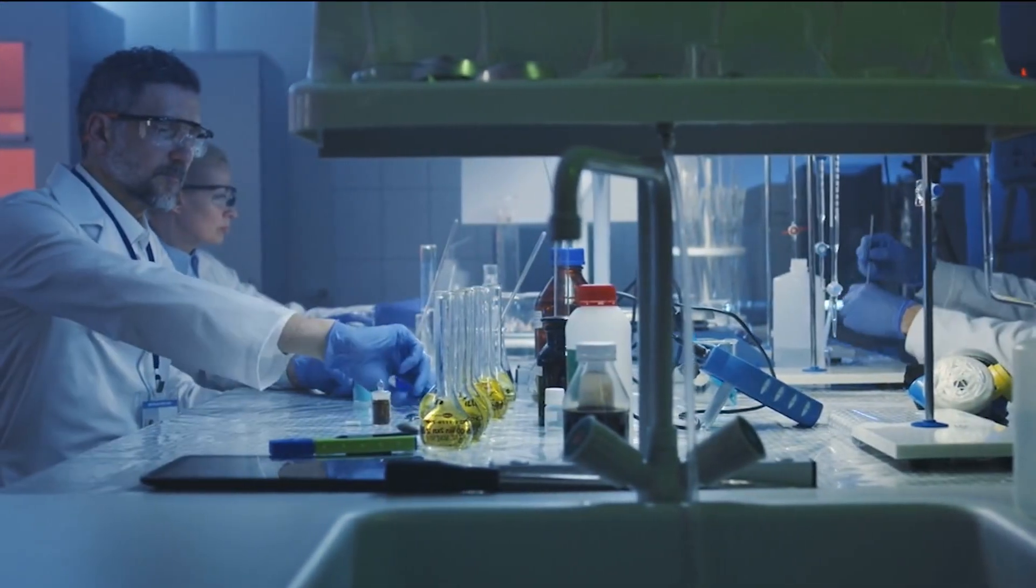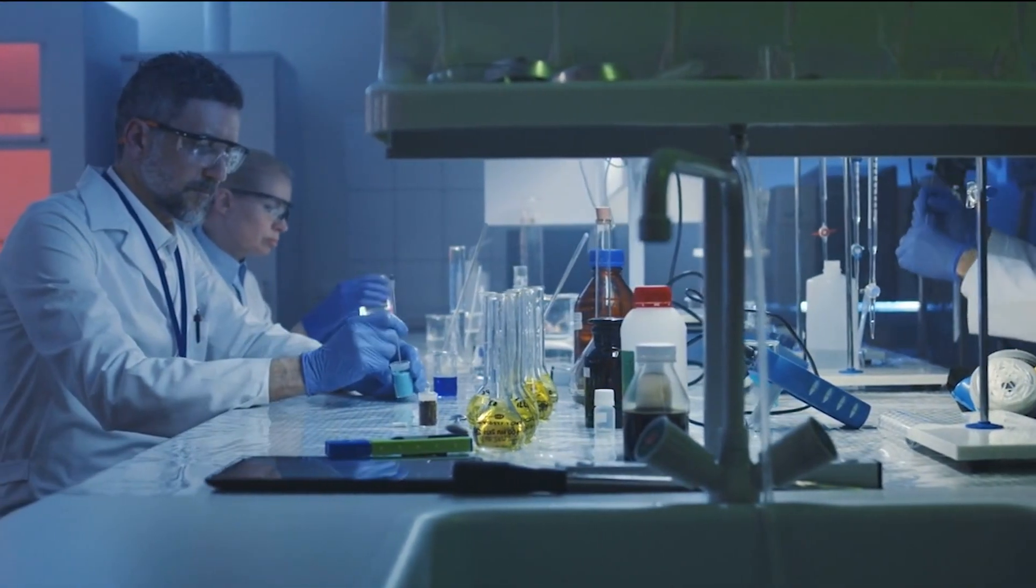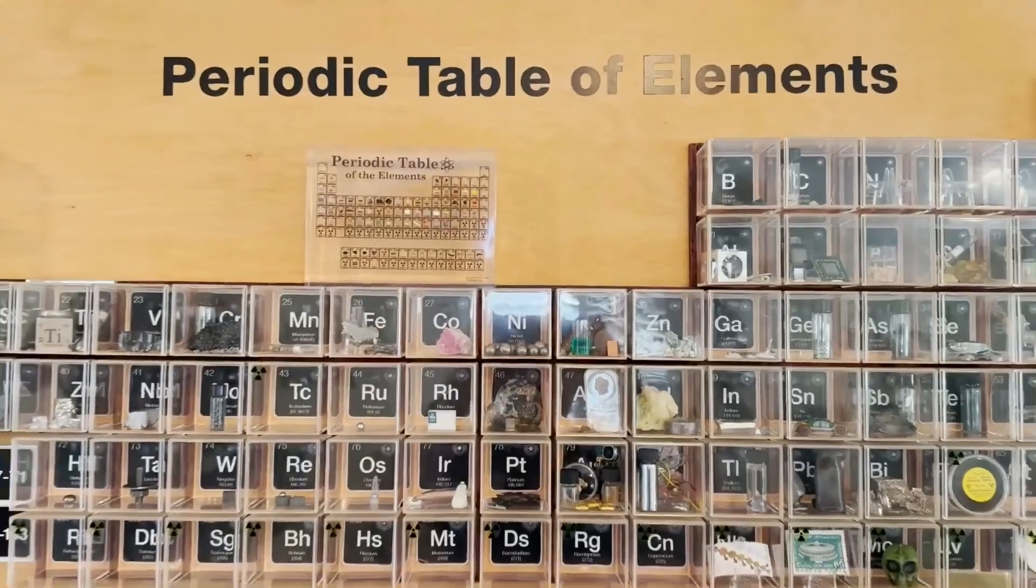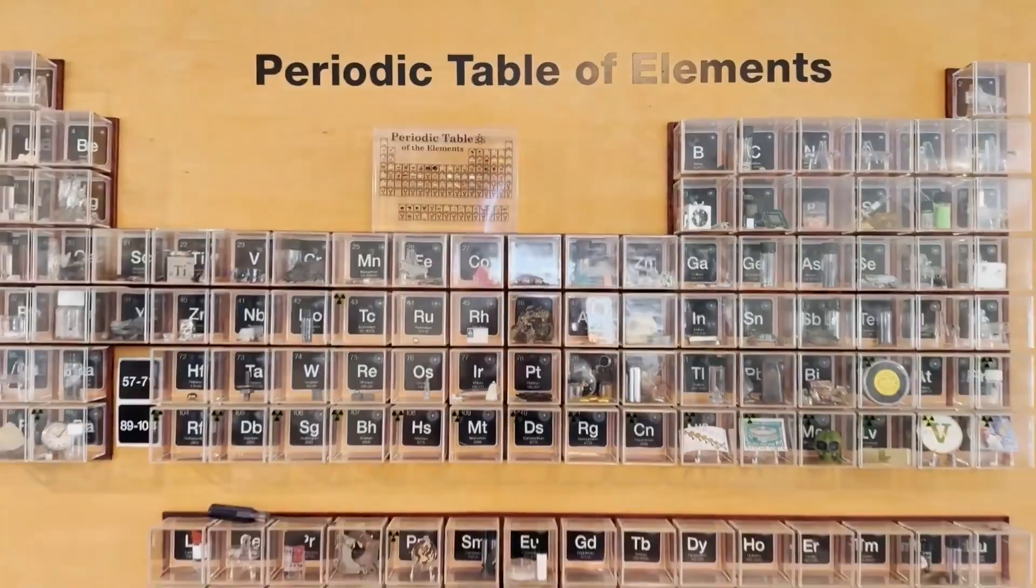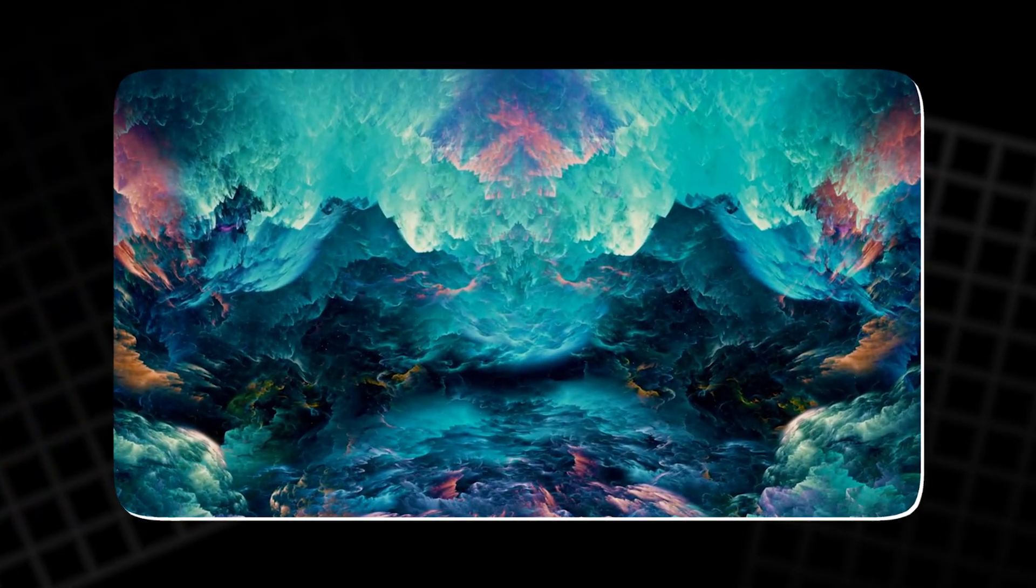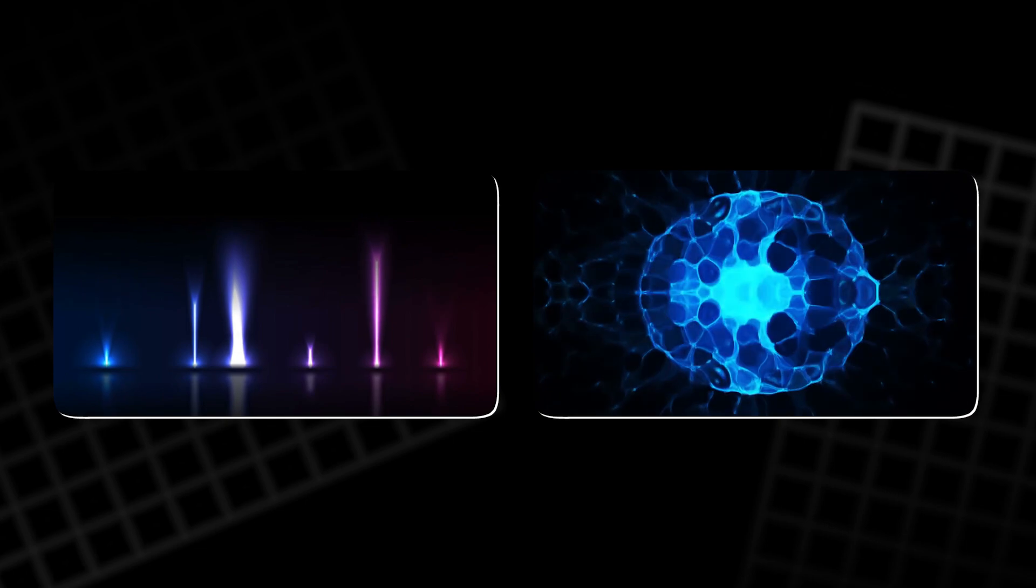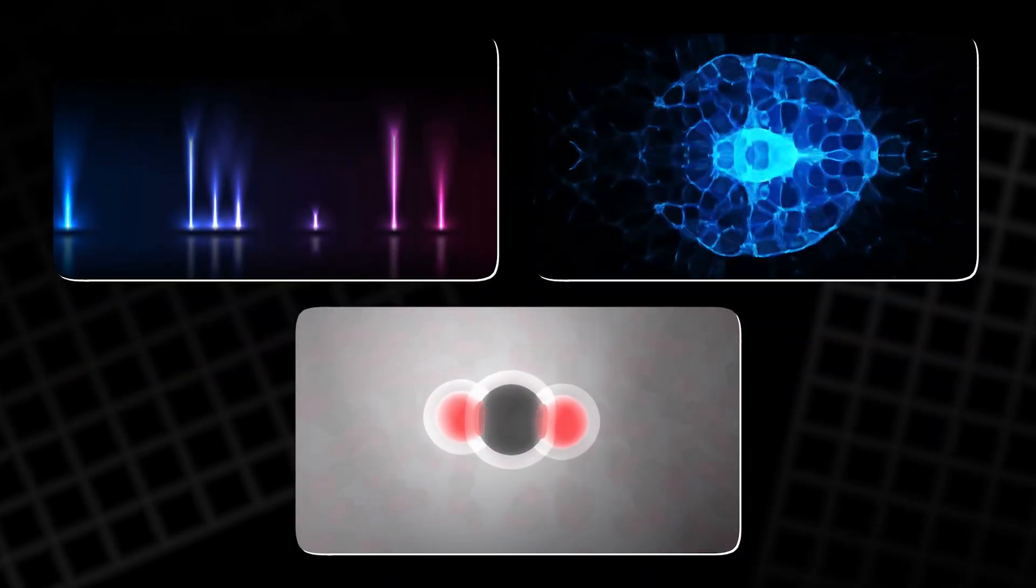This simple yet fascinating experiment reveals the hidden beauty of elements known as noble gases. Positioned on the far right side of the periodic table, these gases are helium, neon, argon, krypton, xenon, radon, and the recently discovered oganesson.